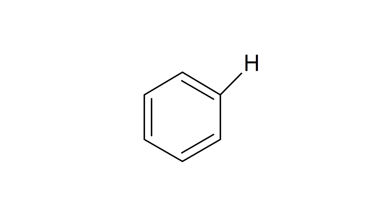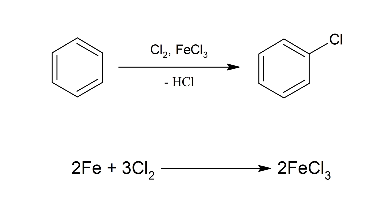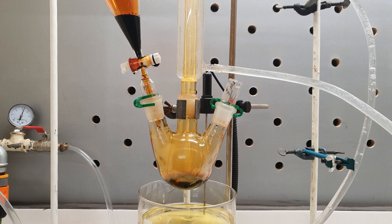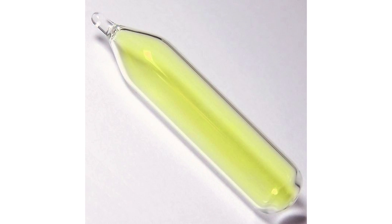Chlorobenzene is a benzene derivative in which one of the hydrogen atoms is replaced with chlorine. The reaction of direct benzene halogenation is a type of electrophilic aromatic substitution, and I have already showed how it's done with bromine. Chlorine is a bit trickier because it's a gas, however many of the steps in the synthesis are similar.